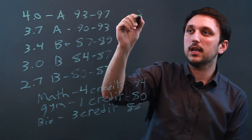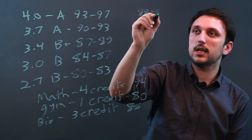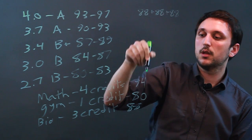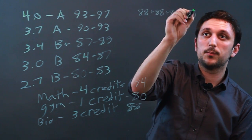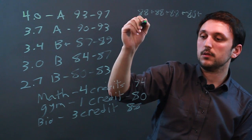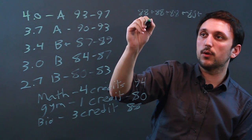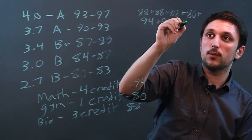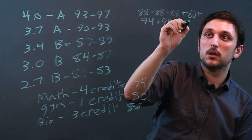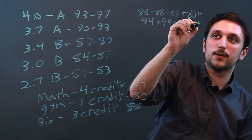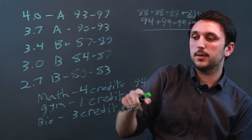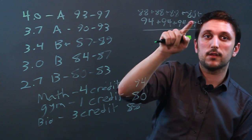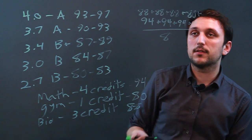So we say 88 plus 88 plus 88, plus 80, plus 94 plus 94 plus 94 plus 94. That's 8 total values, so we divide that by 8.